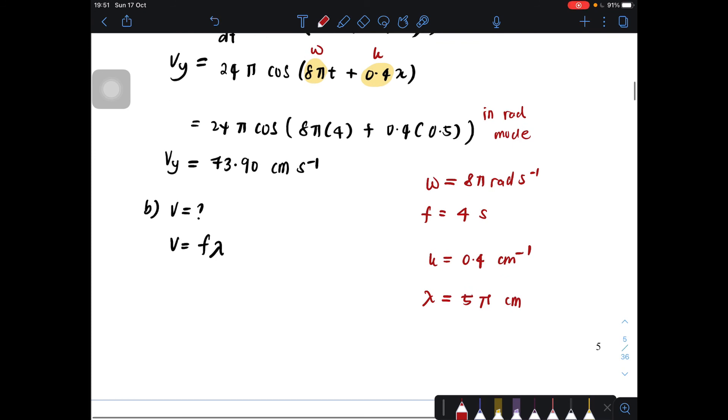And then you just substitute in the formula. So you will get the value for v is equal to 62.83 cm per second.